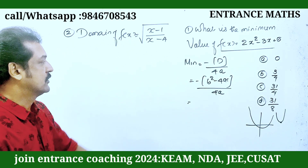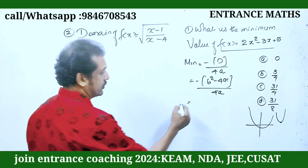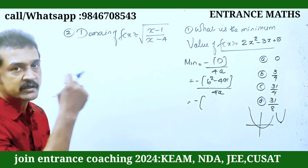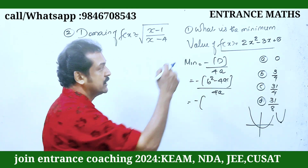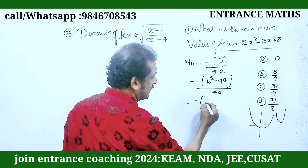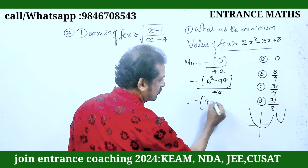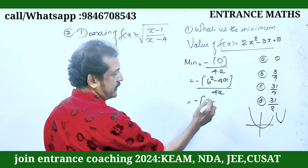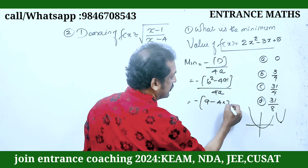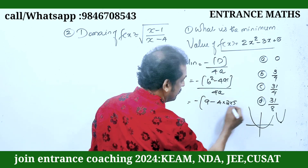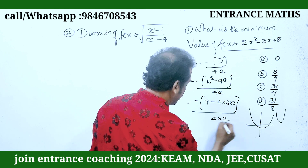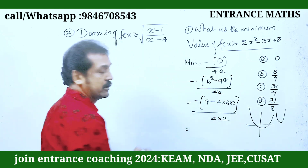Now we can apply b squared. What is b here? This is a, this is b, this is c. Then b squared: minus 3 the whole squared. Then minus 4 into a divided by 2, c divided by 5, whole divided by 4 into 2. Okay, clear.